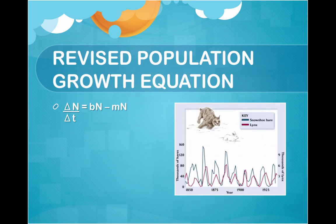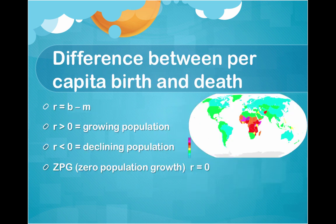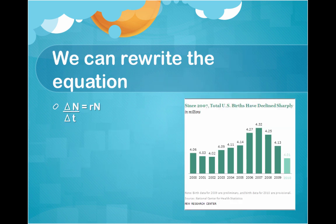The population growth equation is: change in N over change in T equals lowercase b times N minus lowercase m times capital N. You can also look at the difference between per capita birth and death rates. Lowercase r equals lowercase b minus lowercase m. If r is greater than 0, it's a growing population. If r is less than 0, it's a declining population. Zero population growth is when r equals 0. The equation can be rewritten as: change in N over change in T equals r times N, usually used for one year.